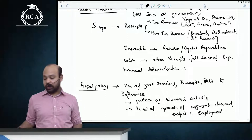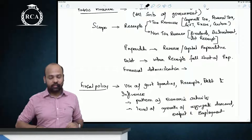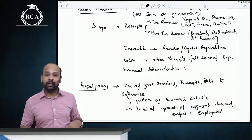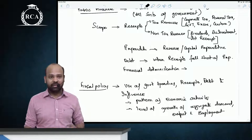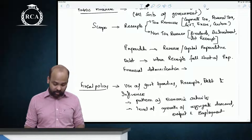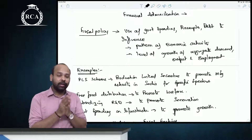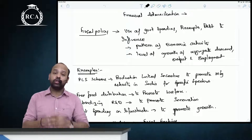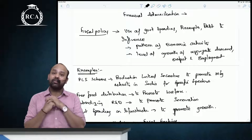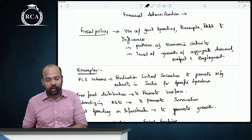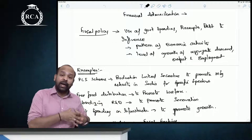As far as capital receipts are concerned, it can be through disinvestment, and the government might also have to borrow to fund any deficit — that comes under the debt part. On the expenditure side, you have revenue and capital expenditure, covering different types of subsidies and allocations across different sectors and ministries. The literal meaning of fiscal policy is the use of government spending, receipts, and public debt.